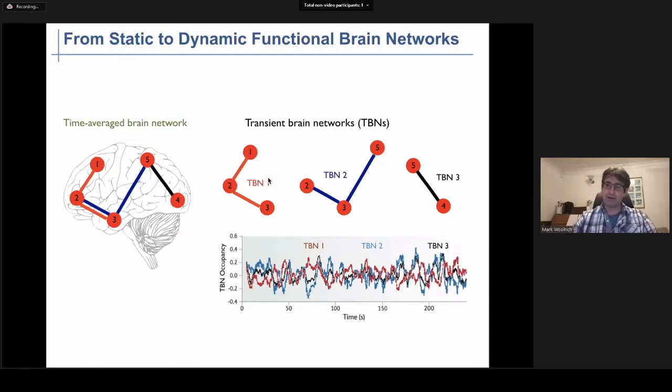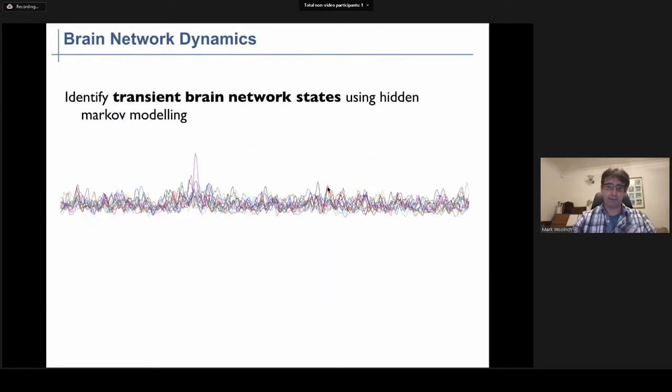So the work I'm talking about today will look to develop techniques that allow us to identify and characterize these transient brain networks, and importantly, the dynamics describing how these networks switch over time. The approach I'll be using will be based on the technique of hidden Markov modeling.